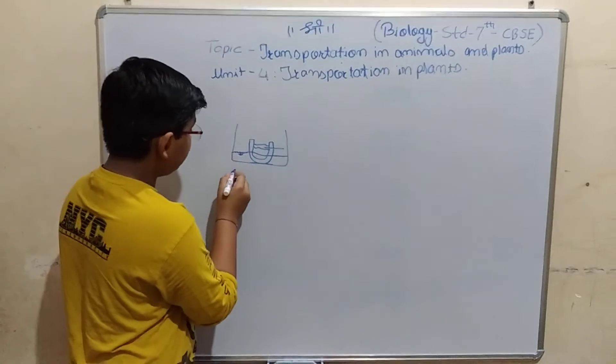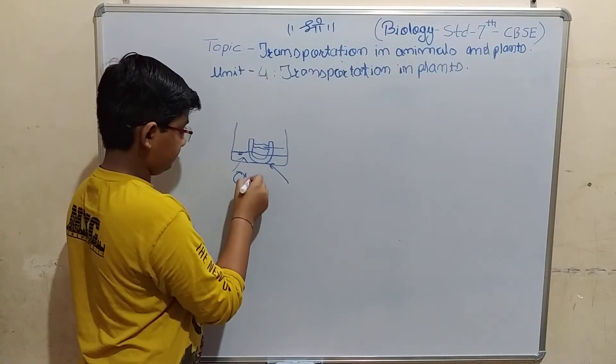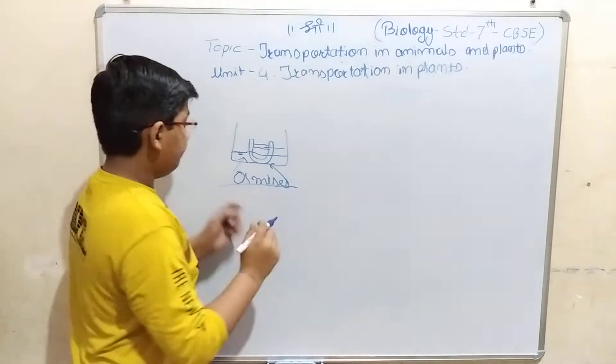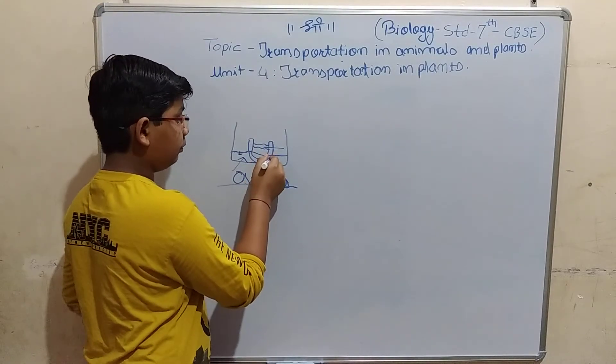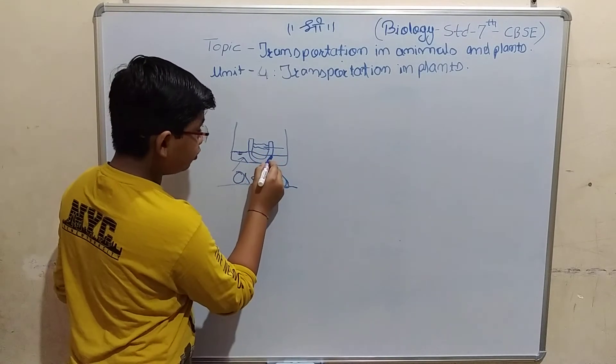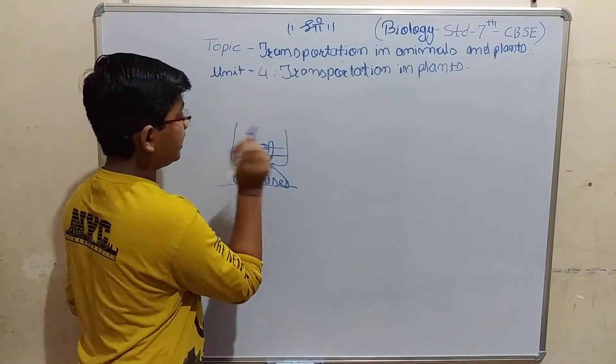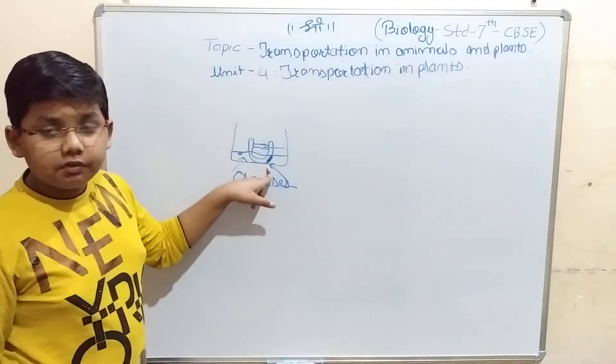This is because of the phenomenon of osmosis. The water molecules get reacted with the potato over here from their root pores and then get into the sugar solution to increase the level of the water. That's how the water moves.